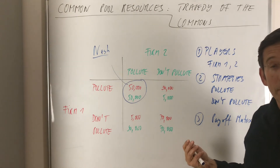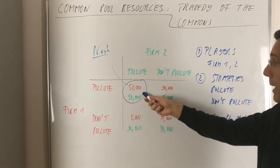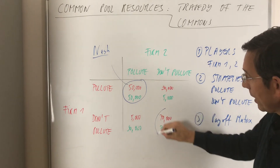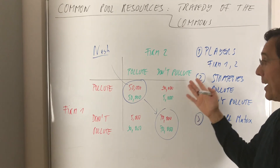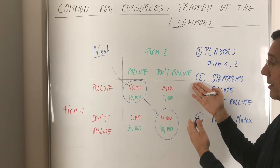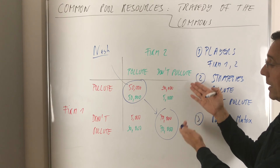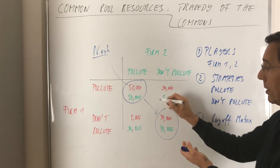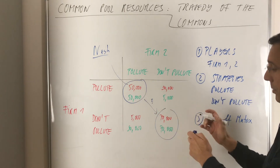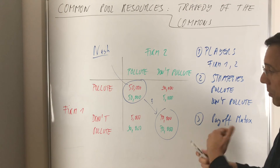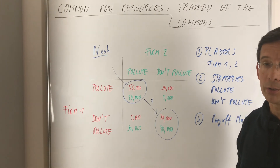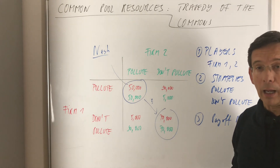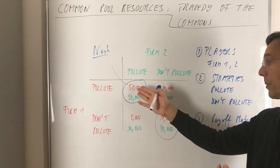And that's our problem. We end up at pollution, pollution. We would like to go to where the earnings are even higher — in the case where both firms do not pollute. But how do we move from this Nash equilibrium to an equilibrium where both firms do not pollute? That's the issue — we have to find ways to get from here to there.